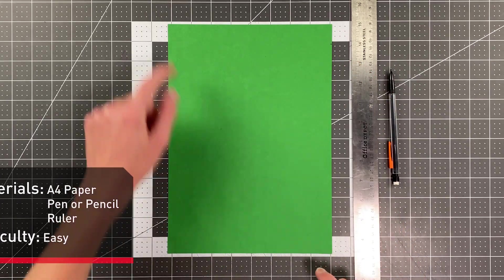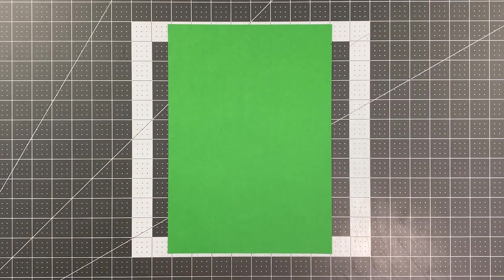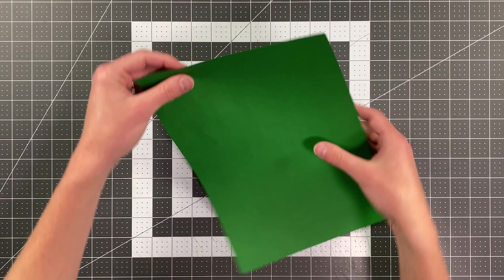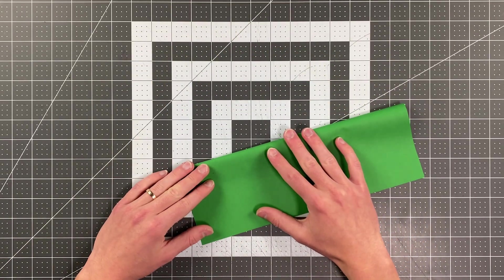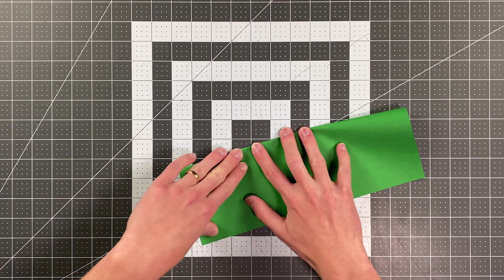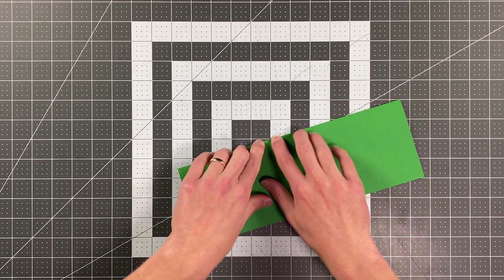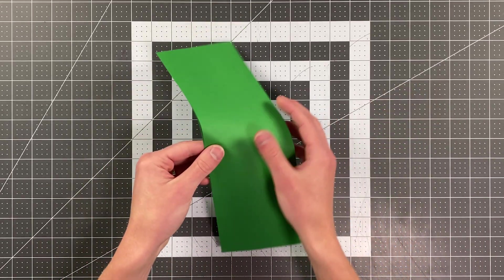We're going to begin by folding this right edge to the left edge. Okay, and you can go ahead and open your paper up.